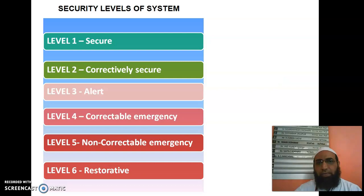We have got 6 levels of security. Level 1 is also called the secure level, level 2 correctively secure, level 3 is the alert level, level 4 correctable emergency, level 5 non-correctable emergency, and level 6 is the restorative level. These are the 6 security levels of the system.